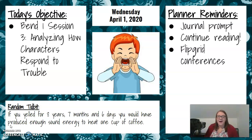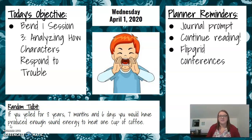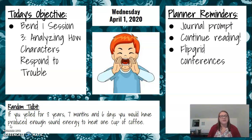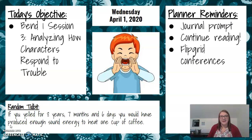Alright, today we're going to be talking about how characters respond to trouble. So as you're reading, how is your character responding to the conflict in the story? Plain reminders: you have another journal prompt today. You should continue reading and then Flipgrid conferences. So if you're on the schedule to conference with me, make sure you do that. If you're on the schedule for yesterday, I have already responded to you or I am working on responding to you, so make sure you are taking a look at what I'm saying back to you.